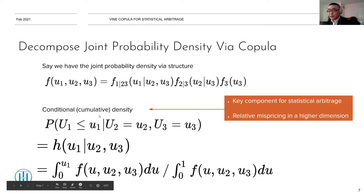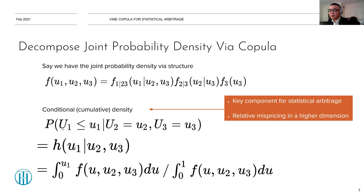Why is the conditional density useful? This is the key component for statistical arbitrage — it gives you relative mispricing information in a much higher dimension. Previously in MPI strategies it was just P(U1 | U2), but here you have P(U1 | U2, U3), and you can add U4, U5, or U6 as long as you know how to calculate the joint probability density. The key takeaway: find the joint probability density, compute the cumulative conditional density, and you'll know whether a stock is overpriced or underpriced.